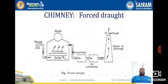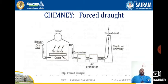Let us discuss about the chimney. A chimney is a system through which exhaust gas or flue gas is taken out to the atmosphere. In a forced draft system, a blower is installed near the base of the boiler and air is forced through the furnace. The flue economizer, air preheater, and stack are provided. This draft system is also called a positive draft system because the air pressure throughout the system is above atmospheric pressure.